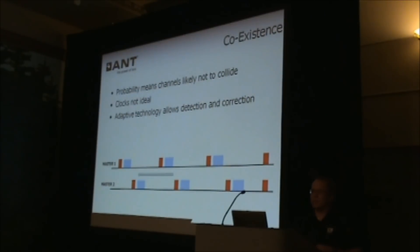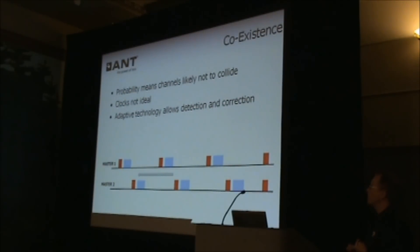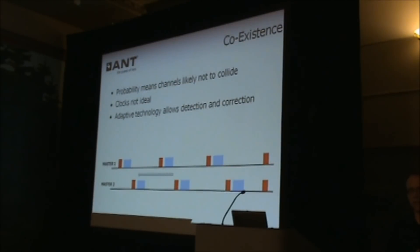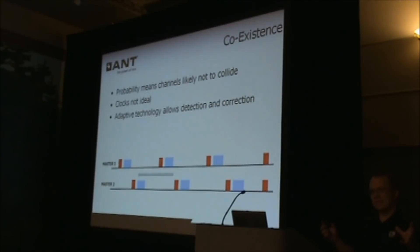Luckily, ANT implements a neat algorithm that gets around this — this is where the concept of adaptability comes in. ANT detects encroaching channels in the RX window it opens after transmitting, then automatically adjusts its timing to move out of the way without losing synchronization to its slave. This is completely seamless to the user, and the effect is that you can go from about 10 devices operating in the same proximity without error to more than 300 devices.